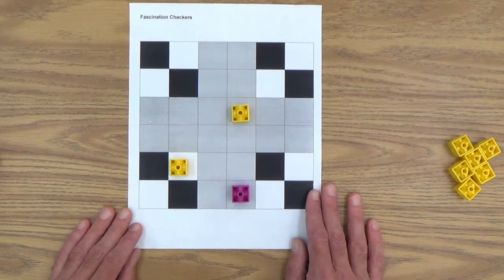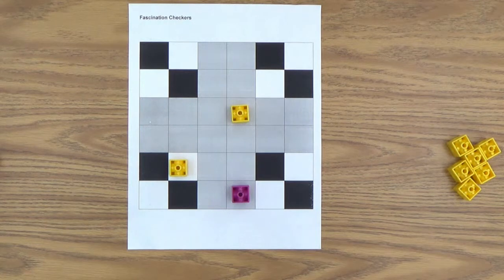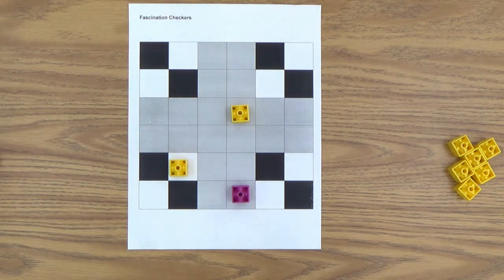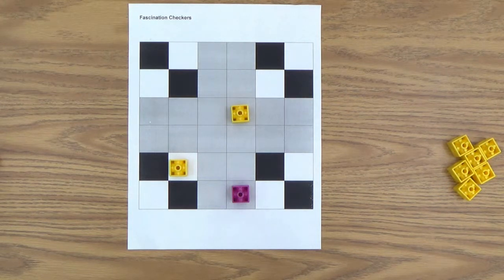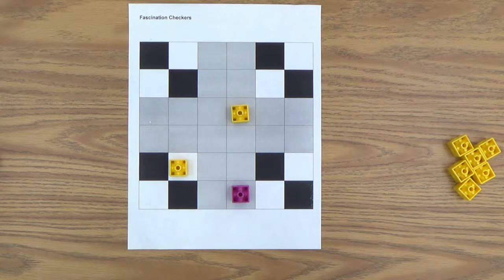So, as your child masters the game, and maybe as you master the game too, you can create larger game boards like I mentioned previously. You can make up your own game boards with a big sheet of graph paper and some markers or whatever you need and more game pieces. So, that's how you play Fascination Checkers. Thank you.